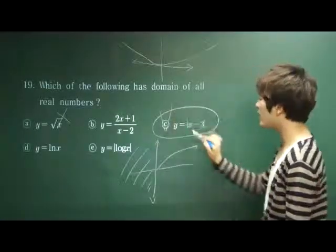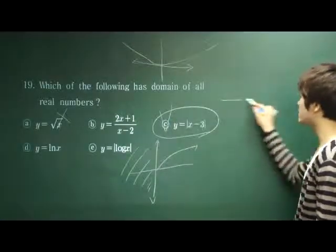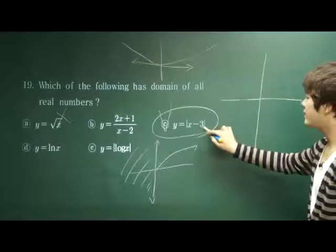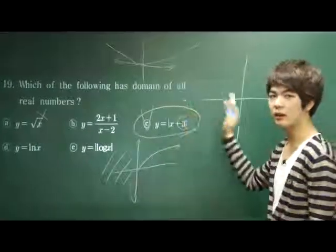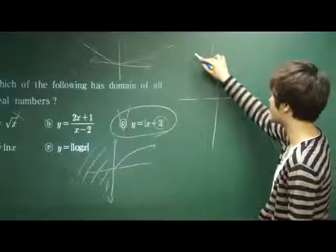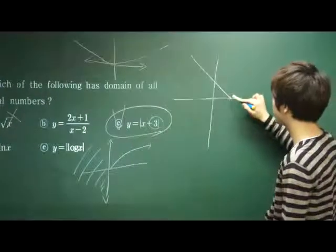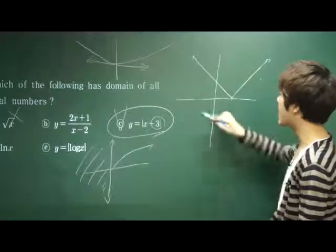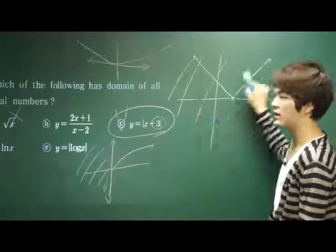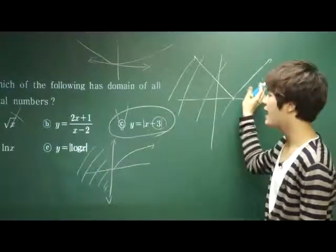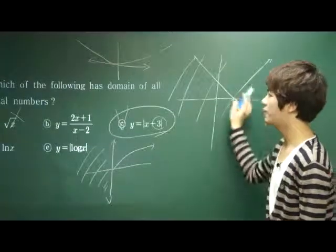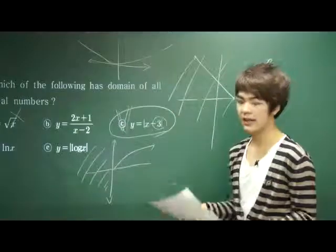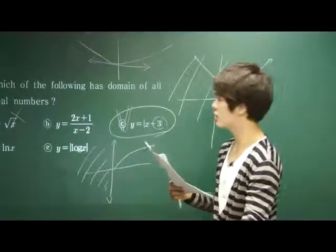Answer choice C — when you graph this out, it is x minus 3, which means 3 units to the right side. The graph has all x values as its domain. Therefore, C is the answer for number 19. Easy question.